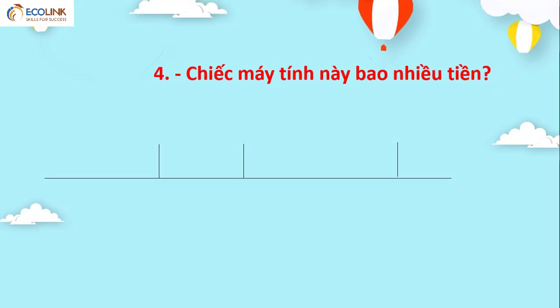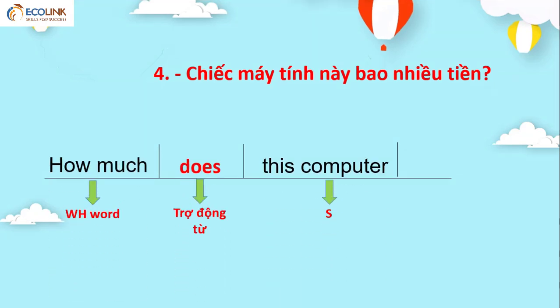Vậy ta có: Chúng ta dùng trợ động từ 'does' đi với chủ ngữ 'this computer' là chủ ngữ số ít. How much does this computer cost?